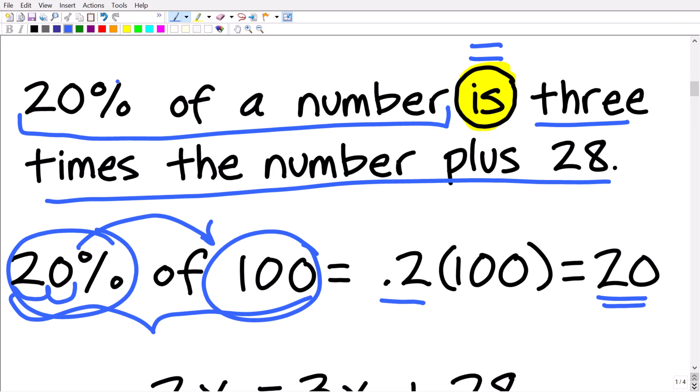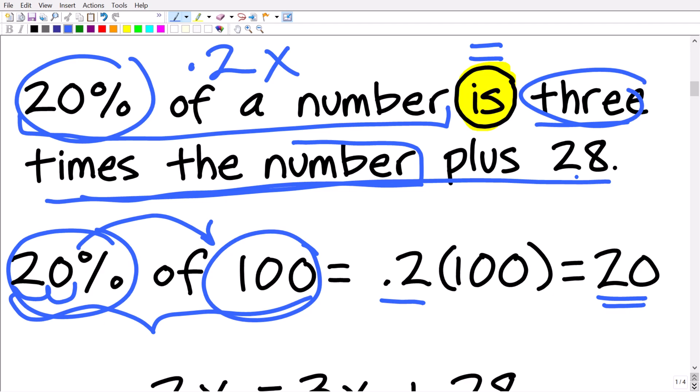So 20% of this number is going to be what? Well, it's going to be 0.2 times that number, which we said is x. Okay, so that's a little bit of a hint here on how to translate this or these sentences into an equation. So let's see if you can do it. So we have 0.2x is equal to three times the number. So what would that look like plus 28?